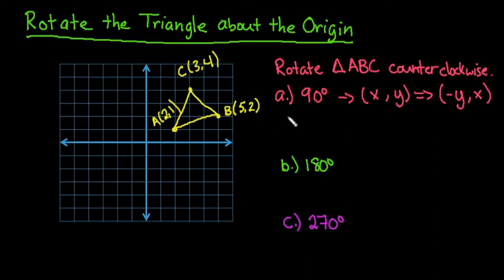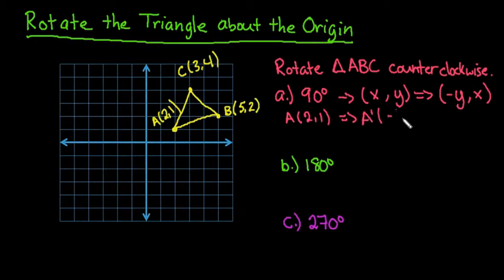So for example, we're talking about point A, which is at (2, 1). I would switch the order of these and change the sign of the new x coordinate. So our A' would be at (-1, 2). We would then go back 1 and up 2, and this would give us our A'.